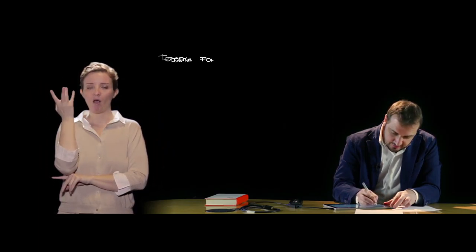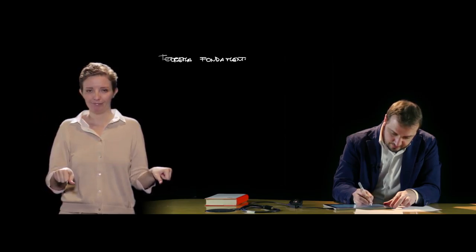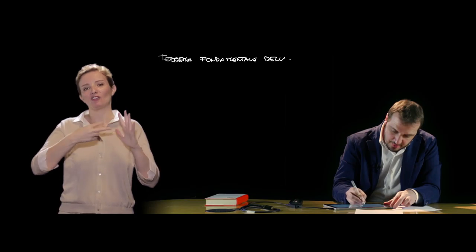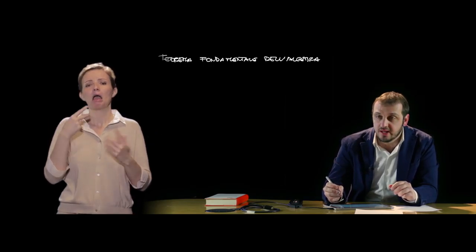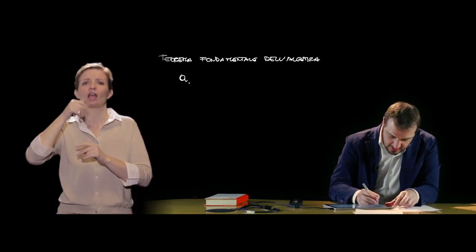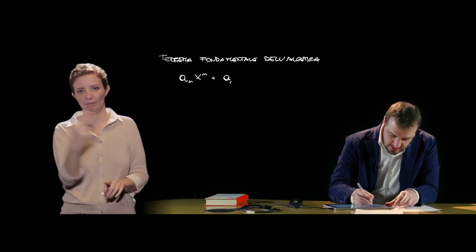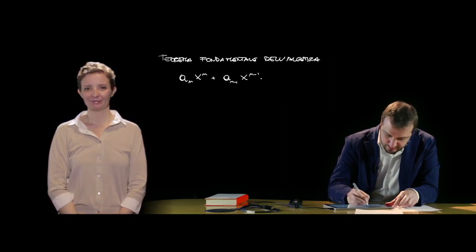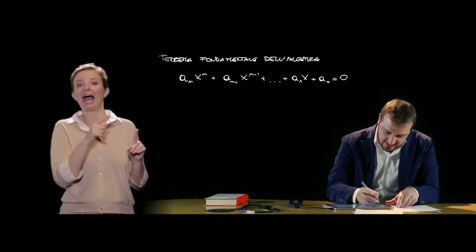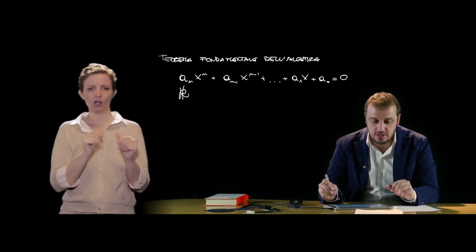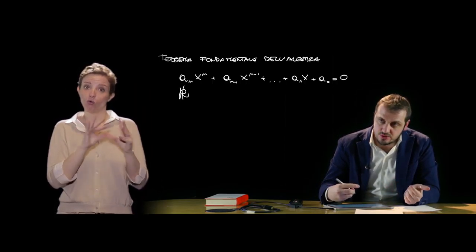Per parlare delle equazioni di grado superiore al secondo, dobbiamo introdurre il teorema fondamentale dell'algebra. Esso ci dice che un'equazione di grado n, con n numero intero positivo, del tipo a_n x^n + a_(n-1) x^(n-1) + ... + a_1 x + a_0 = 0, ha in R, cioè nell'insieme dei numeri reali, un numero di radici minore o uguale al grado n dell'equazione.